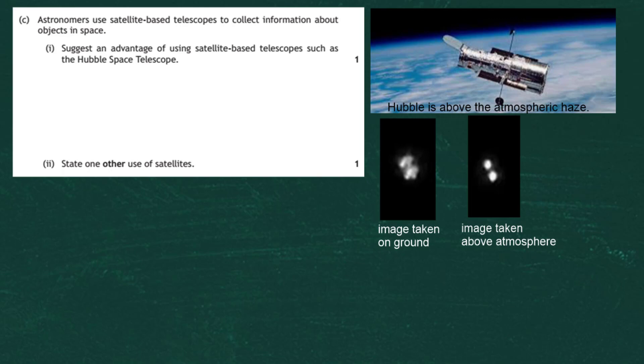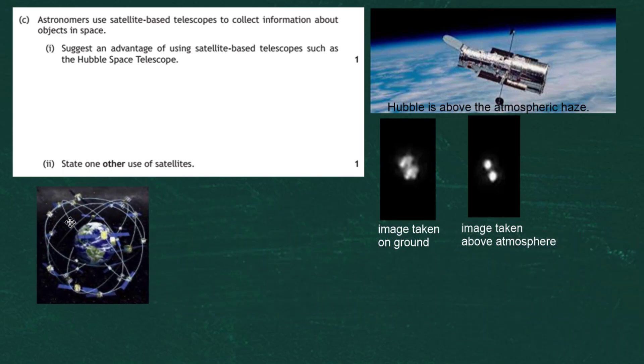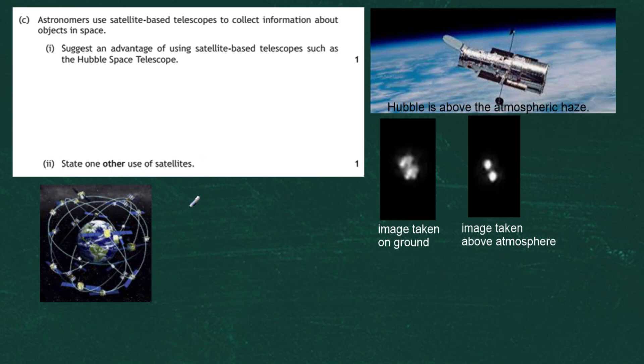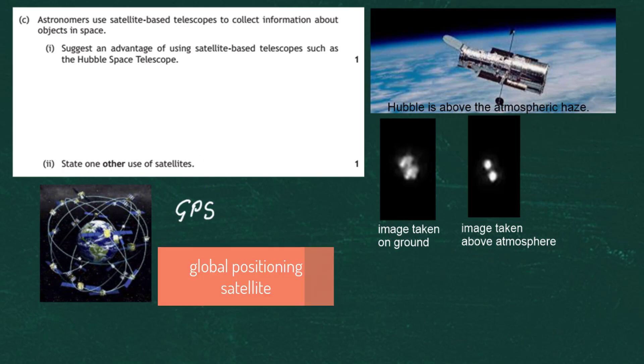Now part two says state one other useful satellite. There's only one mark, just state the use. And the one I like to use is one of the most important ones we have right now and that is GPS. All these satellites provide us with GPS which means Global Positioning Satellite, which means these satellites can tell your position on the surface of the Earth to within about one meter. That's amazing, especially if you're out and doing some sort of hill walking or doing some trekking. You can pinpoint your exact position. In fact, even aircraft now rely on GPS, Global Positioning Satellites, to pinpoint accurately where they are, even on the runway and even when they're flying between different countries. So that's a great use for satellite, and state that to get your mark: GPS, Global Positioning Satellite.